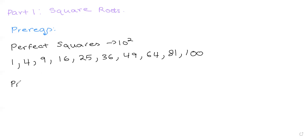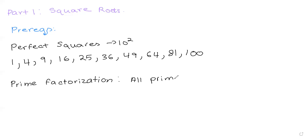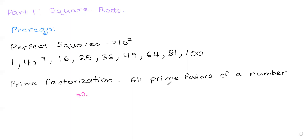You also need to know how to prime factorize. Prime factorization is basically finding all prime factors. Let's take a quick example with the number 72. Let's start off by going through the definition of prime factorization — our goal is to find all the prime factors.